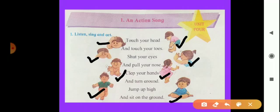I will read this poem again — I sing it and you also sing with me. Touch your head and touch your toes. Shut your eyes and pull your nose. Clap your hands and turn around. Jump up high and sit on the ground. Nice poem! Jump up high and sit on the ground — you can see the action.